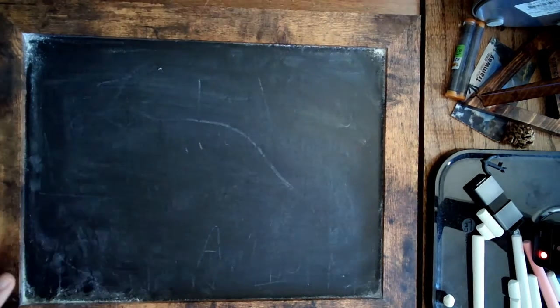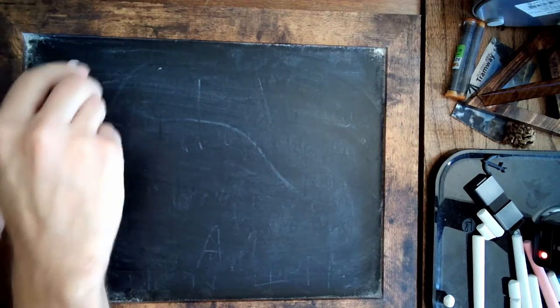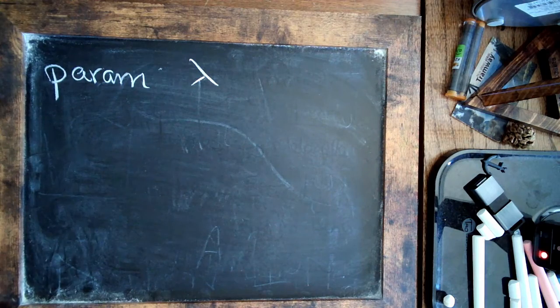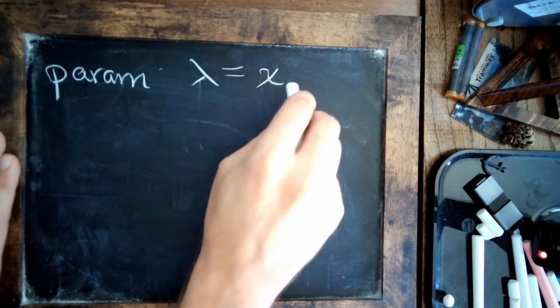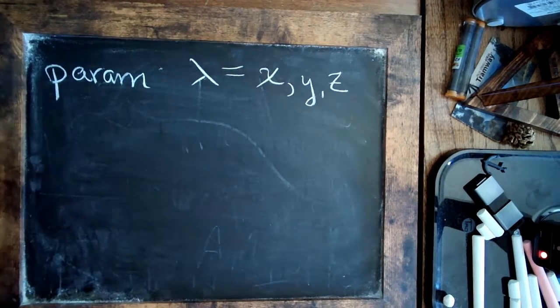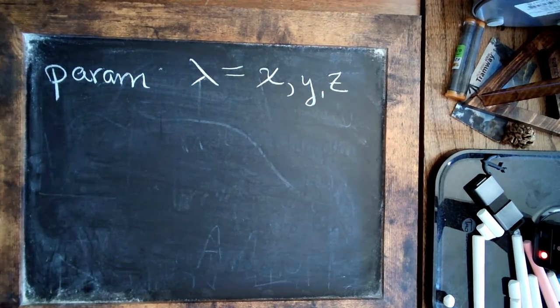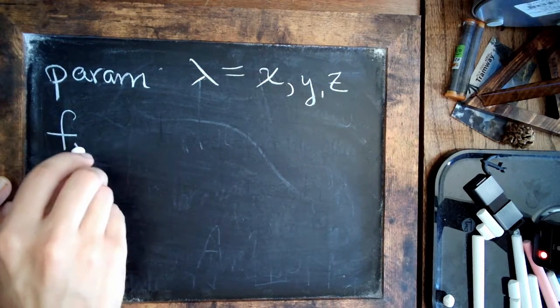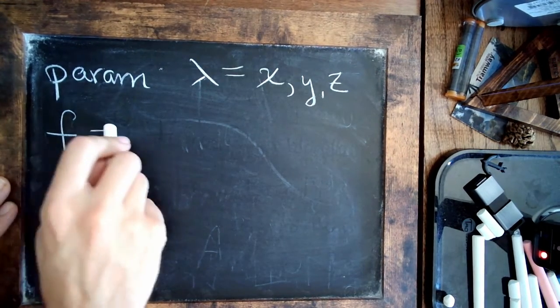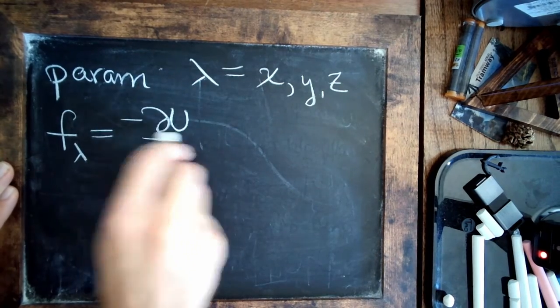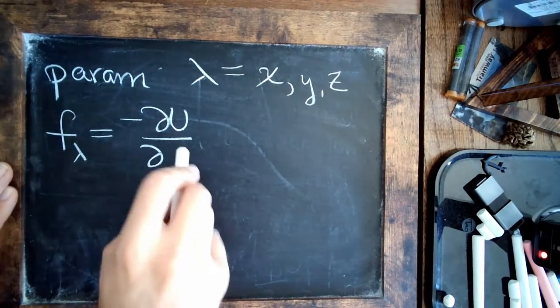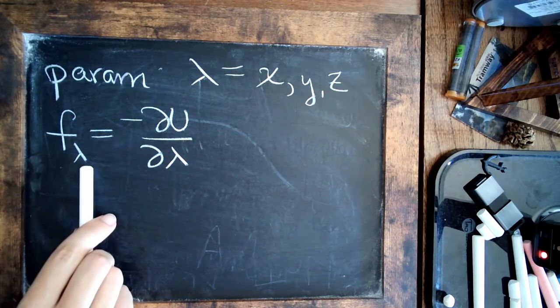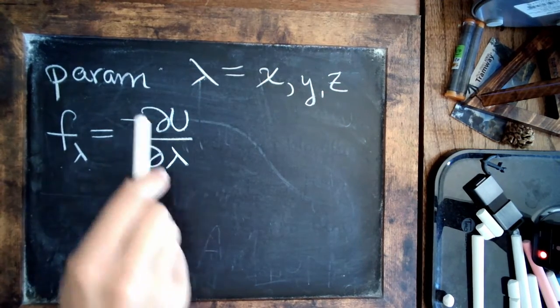So to explain this theorem a bit more, let's say we have some parameter lambda. Now lambda could be equal to, for example, x, y, or z, or any positional coordinate of the system, we're just giving it this general name. And how in general we would find the force in the lambda direction would be to take the negative derivative of the potential energy, or just of the energy of the system, with respect to that coordinate. So if we wanted to find the force in the x direction, take the negative derivative of the energy with respect to x.